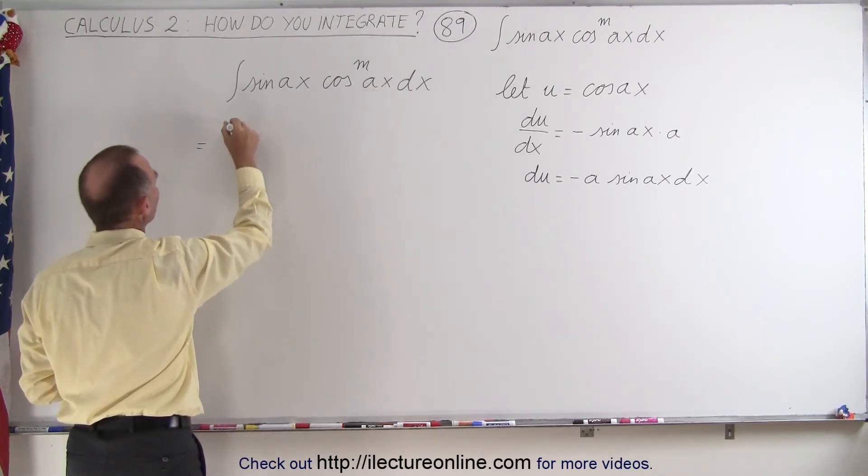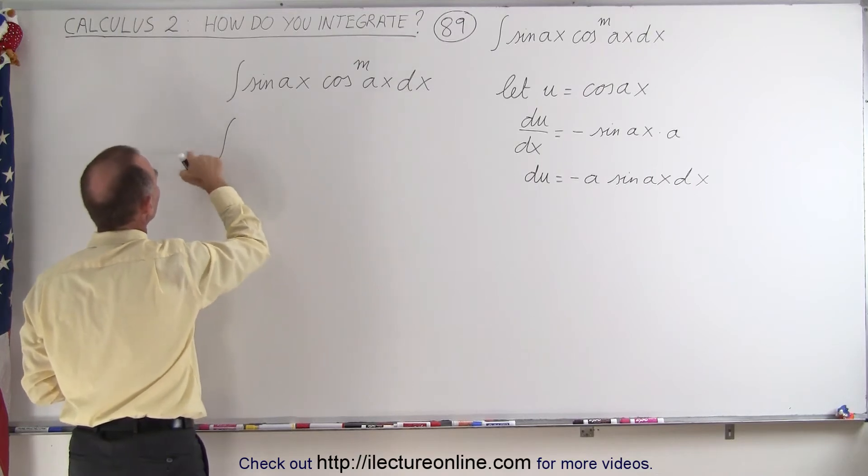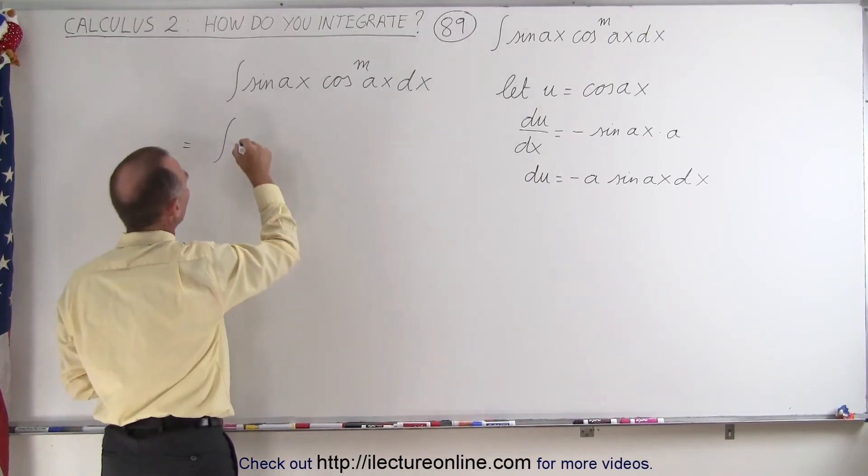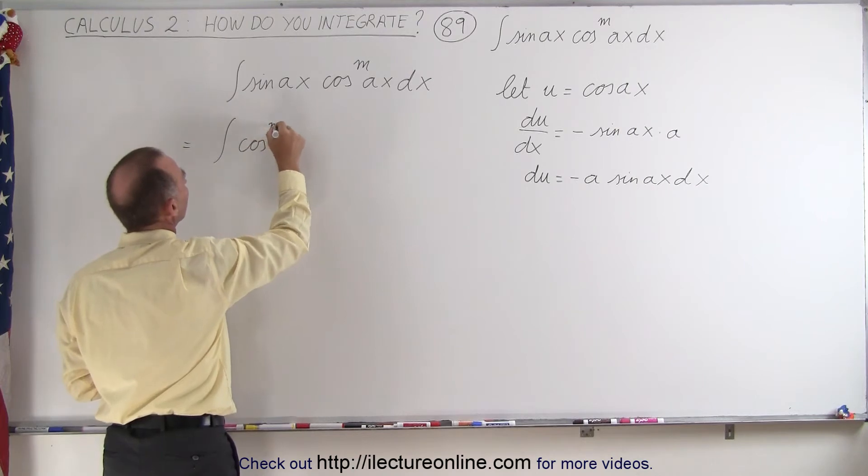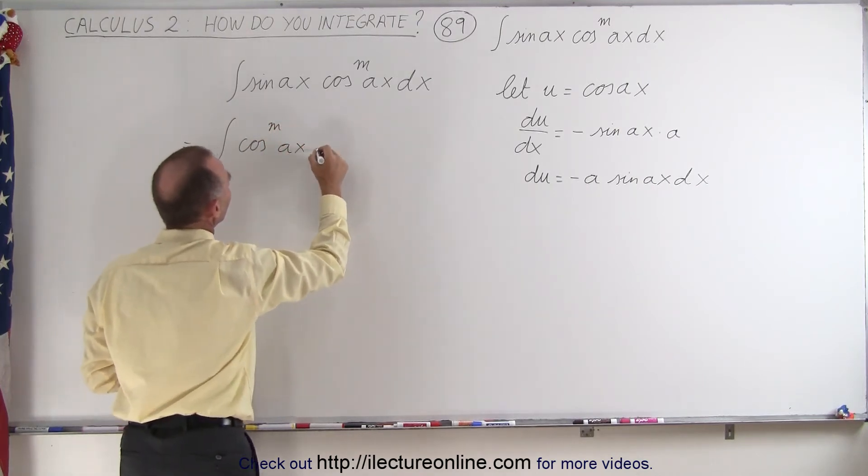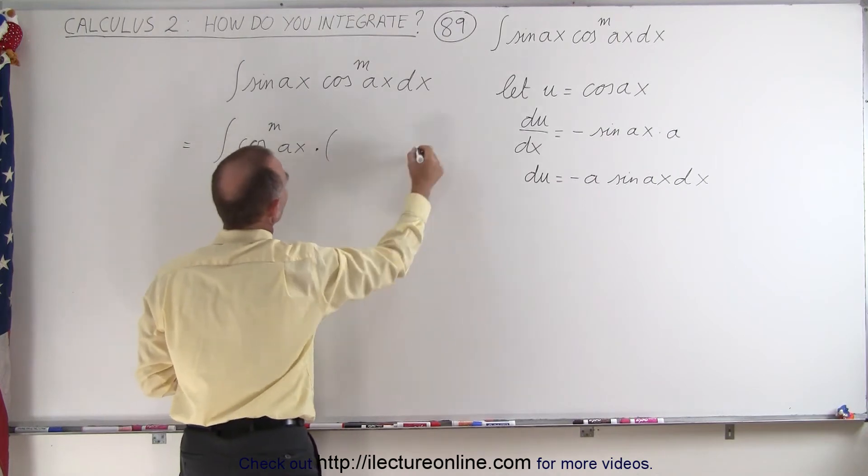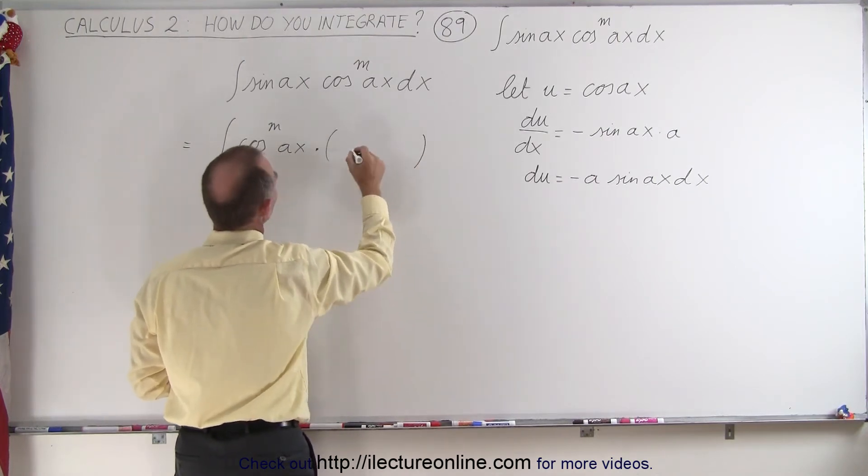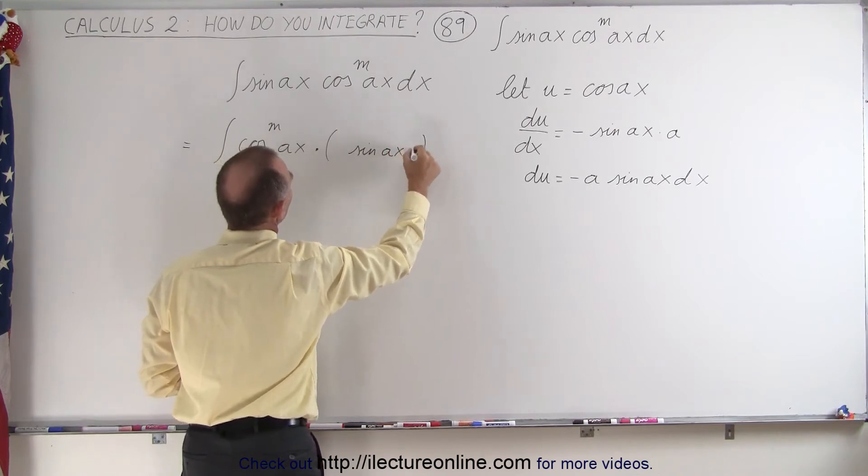This can be written as the integral of the cosine to the m power of Ax, times—and let's put it in parentheses here—we have the sine of Ax dx.